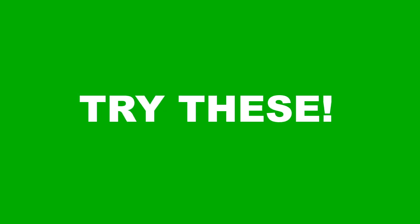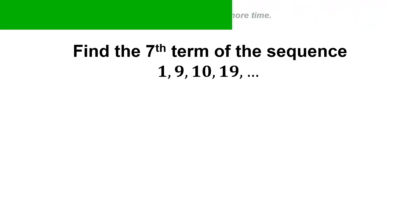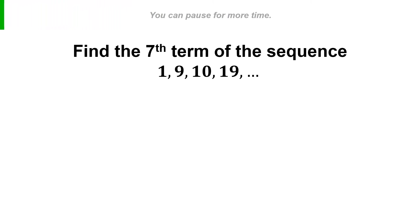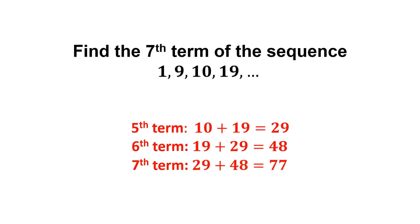Now try this: Find the seventh term of the sequence 1, 9, 10, 19, and so on. The fifth term is 10 plus 19, which is equal to 29. The sixth term is 19 plus 29, equal to 48. Therefore, the seventh term is 29 plus 48, which is equal to 77.